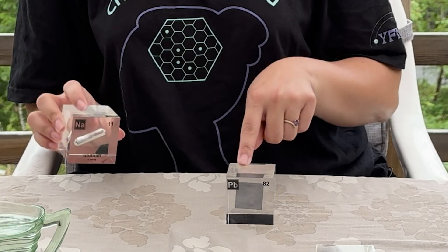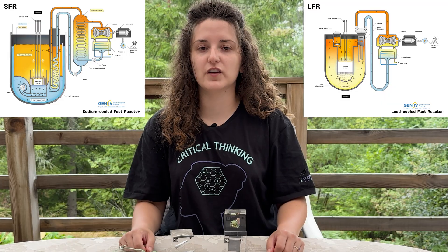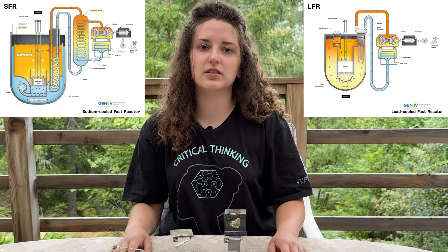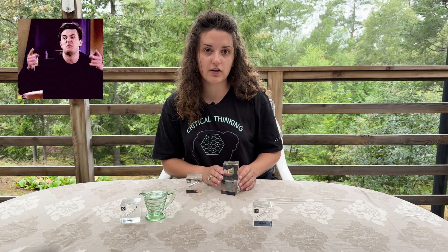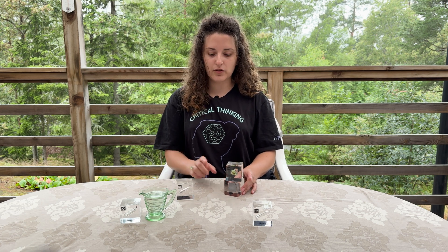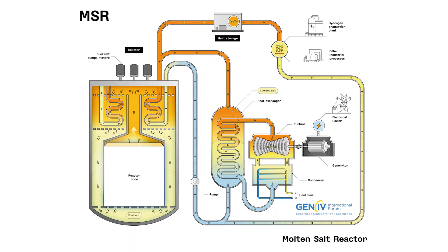Both water and helium need to work under pressure to be efficient coolants. However, we also have other options: sodium and lead — either lead itself or lead-bismuth — are two concepts of liquid metals that are quite efficient at transferring heat and cooling down a reactor. They are mostly used for advanced types of nuclear reactors. The cool thing about sodium and lead or lead-bismuth is that they don't need a pressurized system to work as coolants, which makes reactor design quite simpler in that aspect.